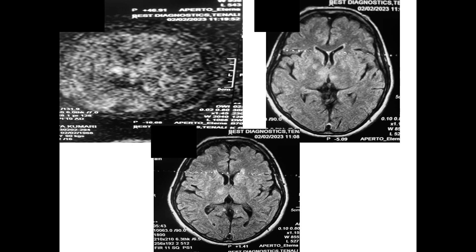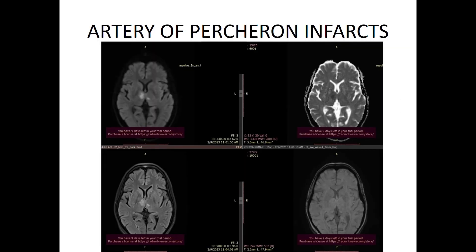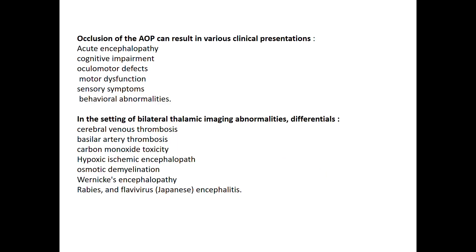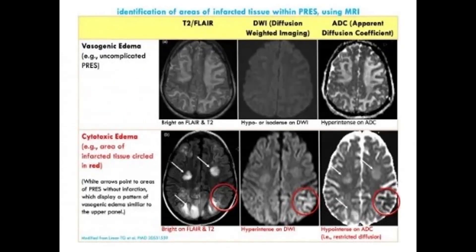On repeat MRI, we identified an artery of Percheron infarct — an ischemic stroke that is easily missed. The incidence is very low, 0.2 to 3%. The artery of Percheron typically presents like movement disorders with parkinsonian features and altered sensorium. The blood supply arises from a common trunk with perforators supplying both thalami — that is why patients have multiple symptoms and are frequently mistaken for encephalitis such as Japanese encephalitis, or deep venous sinus thrombosis.